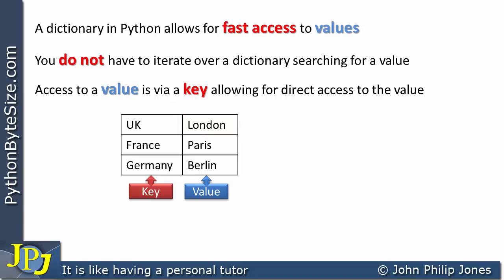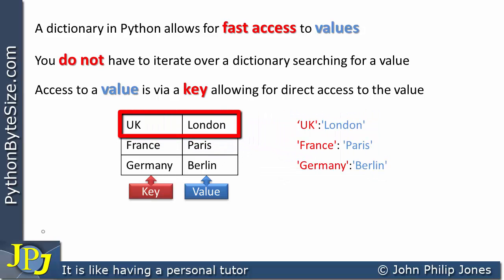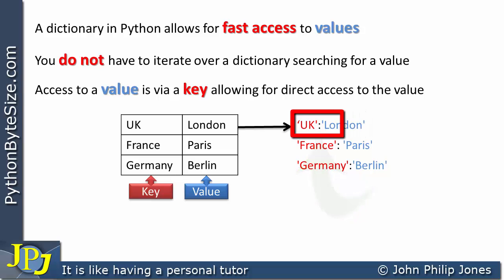Now if we consider how we could do this in Python, you can see here the appropriate syntax. This particular entry maps to this here, where UK is the key and London is the value, and you can see that between UK and London we have this colon. UK is in quotes, which means the key is a string, and London is also in quotes, which means the value in this particular case is also a string.